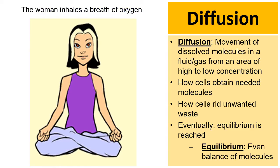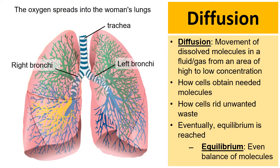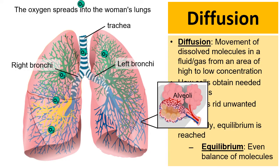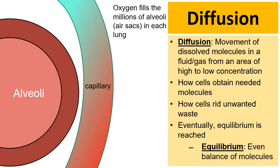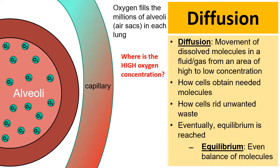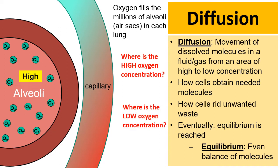Imagine a woman who inhales a breath of O2, oxygen. The oxygen spreads into her lungs — down her trachea, through the left and right bronchi, and into the lungs. In our lungs there are little air sacs called alveoli, millions of them in each lung, that fill up with oxygen. The high oxygen concentration is in the alveoli, and the low oxygen concentration is in the tiny blood vessels called capillaries just on the outside of the alveoli.